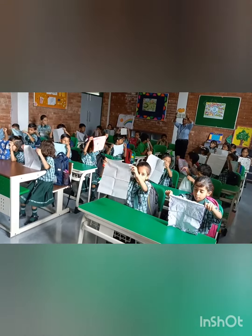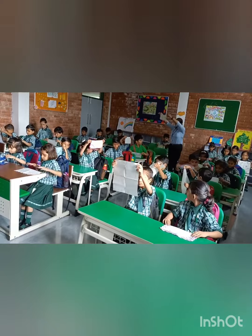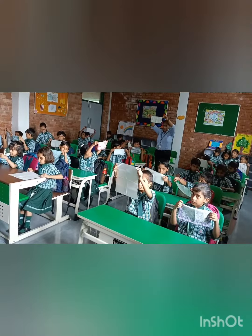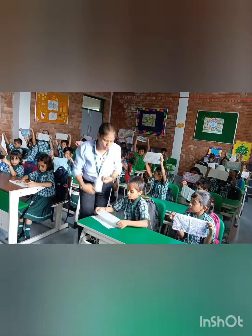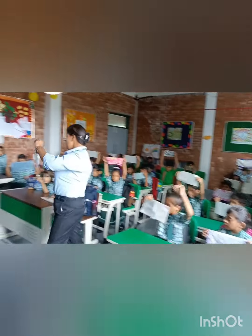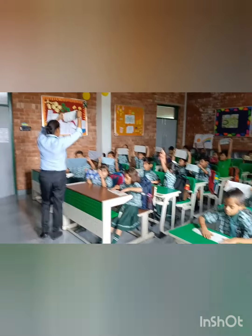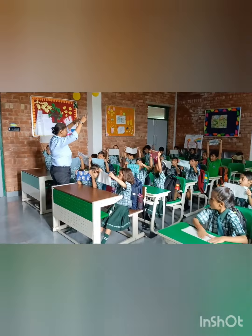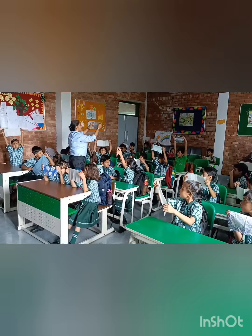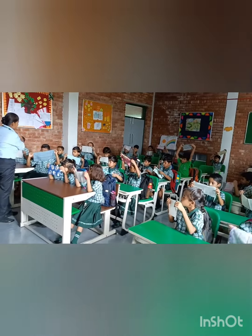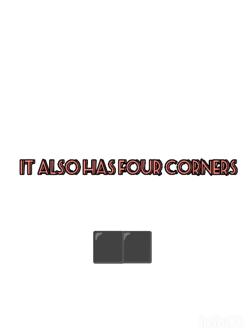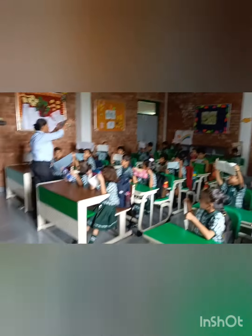Now fold your hanky like this way. Everyone fold your hanky like this way. Now tell me, which shape is this? Rectangle. In a rectangle, opposite sides are equal. Just have a look — opposite sides are equal. And in this shape also, four corners.